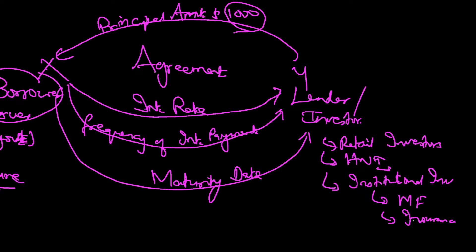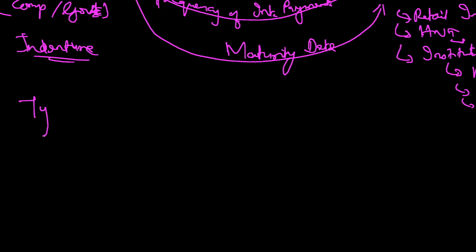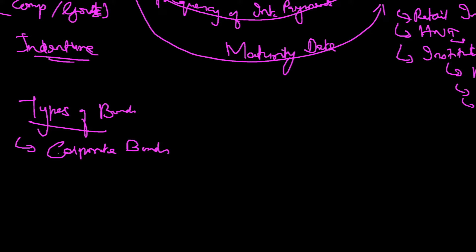Insurance companies and banks — these are the lenders. When we pay insurance premiums, one of the things they do with that money is invest in bonds. There are various types of bonds: corporate bonds issued by corporate companies, government bonds issued by the government. Apart from these, there are many other bonds as well, like zero coupon bonds.